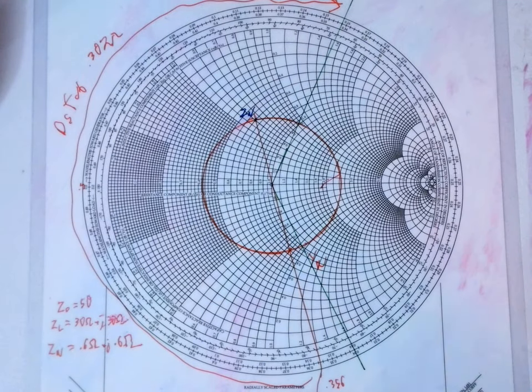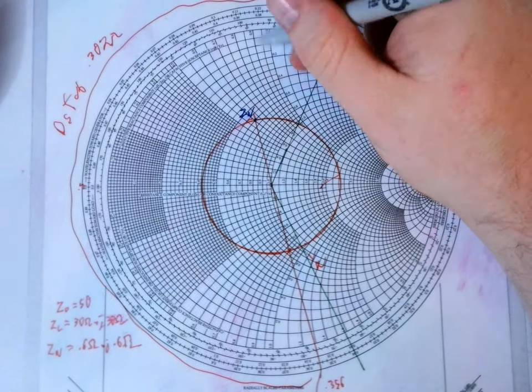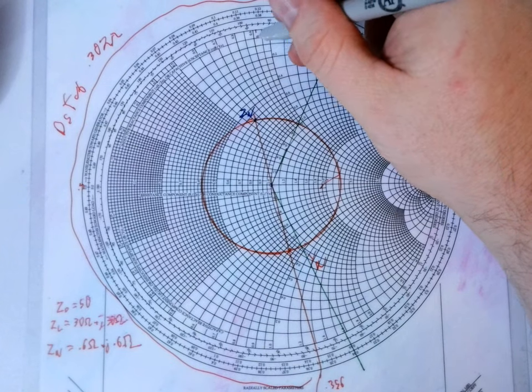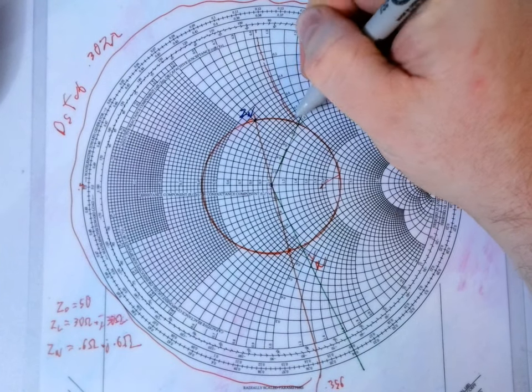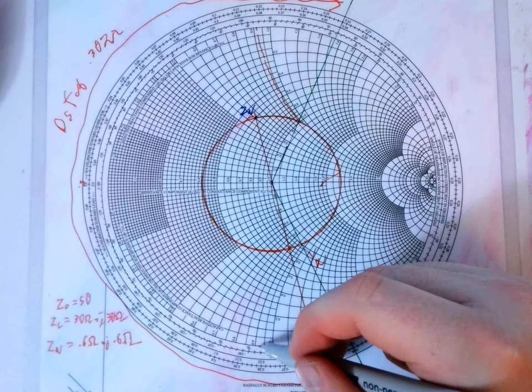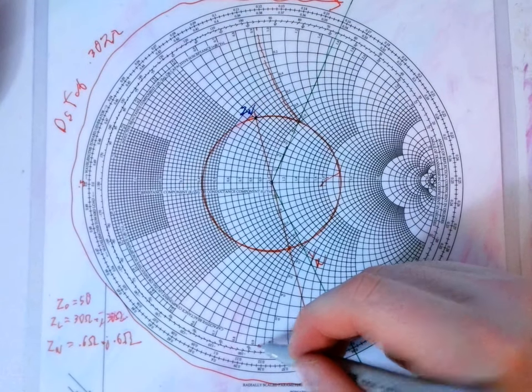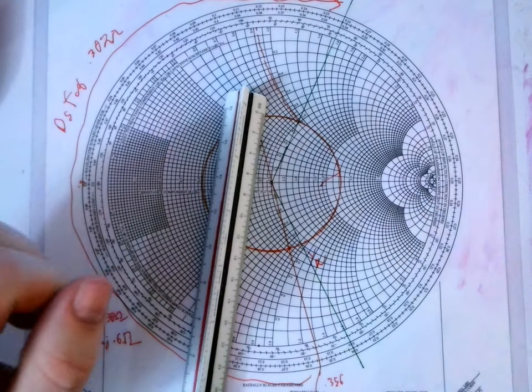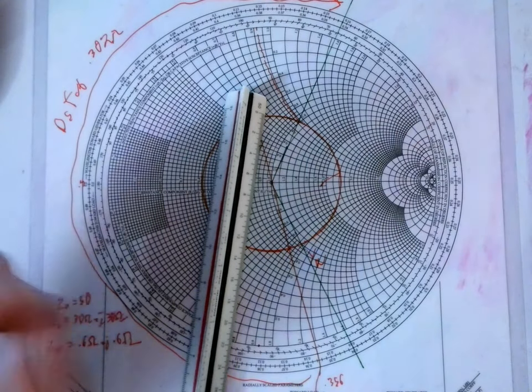Now, once again, we have to find the reactance at this point. And if you recall from the last one, it is about 0.925 or so. So, we come back to the same point here. We draw our line. I'll use a different color to make this more clear.